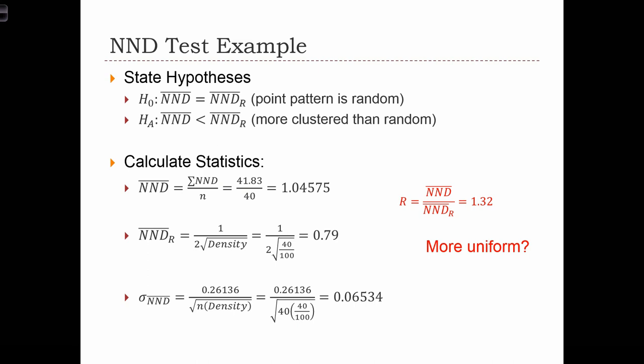So the null hypothesis in this case is always that NND bar equals NND bar R. We're always going to assume that the point pattern is random, and then we're going to let the statistics tell us whether or not there is some kind of spatial pattern in there.